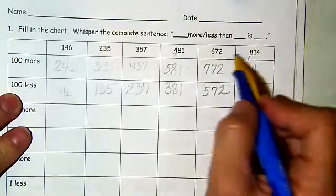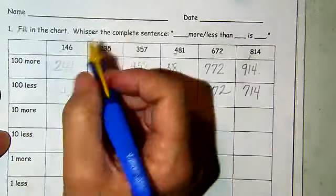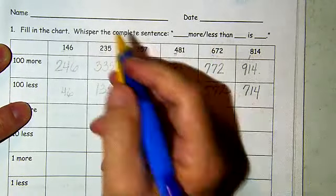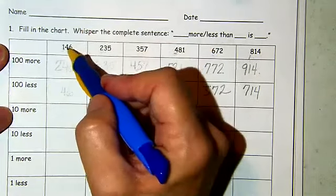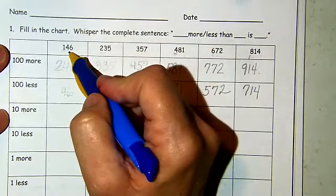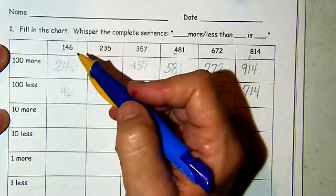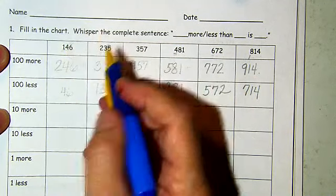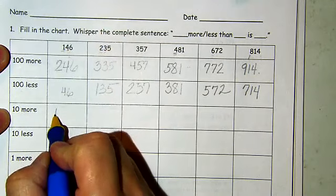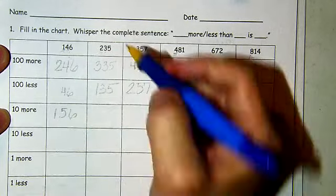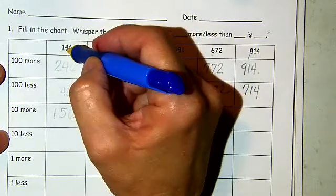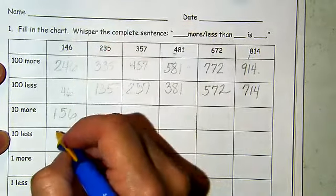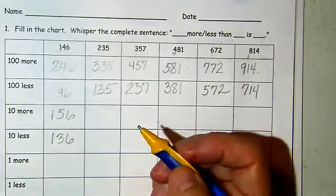We're going to do the same thing to these numbers, only now we're going to do 10 more and 10 less, so we are looking in the tens place on all of these numbers. The tens place here is four — there are four tens. One more 10 would be five tens. The other digits aren't going to change — we're only changing that digit. So 10 more is going to be 156. If I go back and take one 10 away, I have three tens — 136.